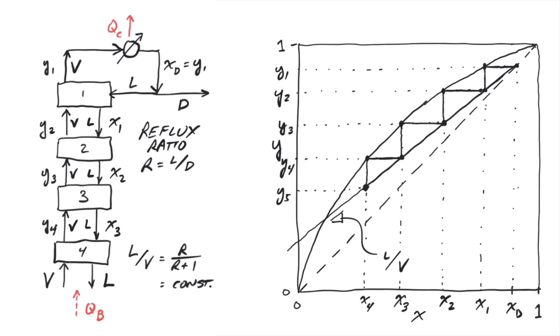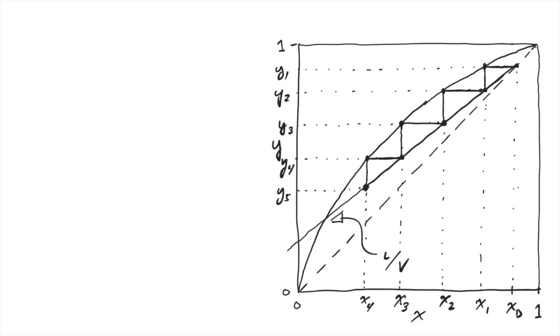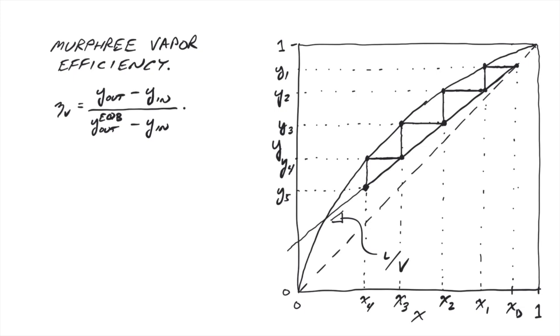If you're working with a tray column and have experimental access to temperatures and compositions at each stage, it's possible to describe the efficiency of individual trays. One commonly used empirical model for the performance of individual stages is the Murphree vapor efficiency, EMV, or eta sub V, which is defined as the difference in composition of the gas between adjacent stages, divided by what that difference would be if the gas leaving the stage leaves in equilibrium.